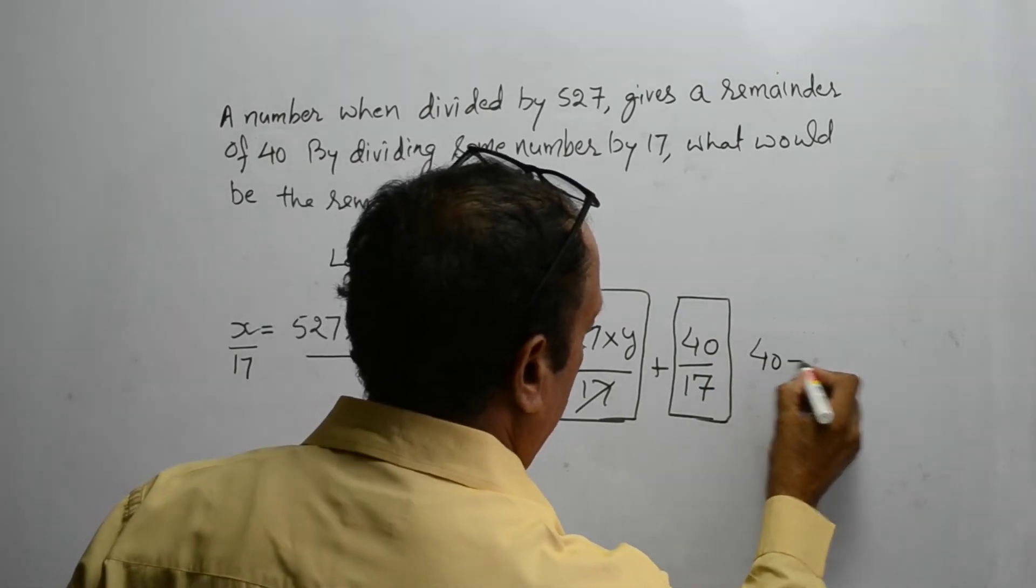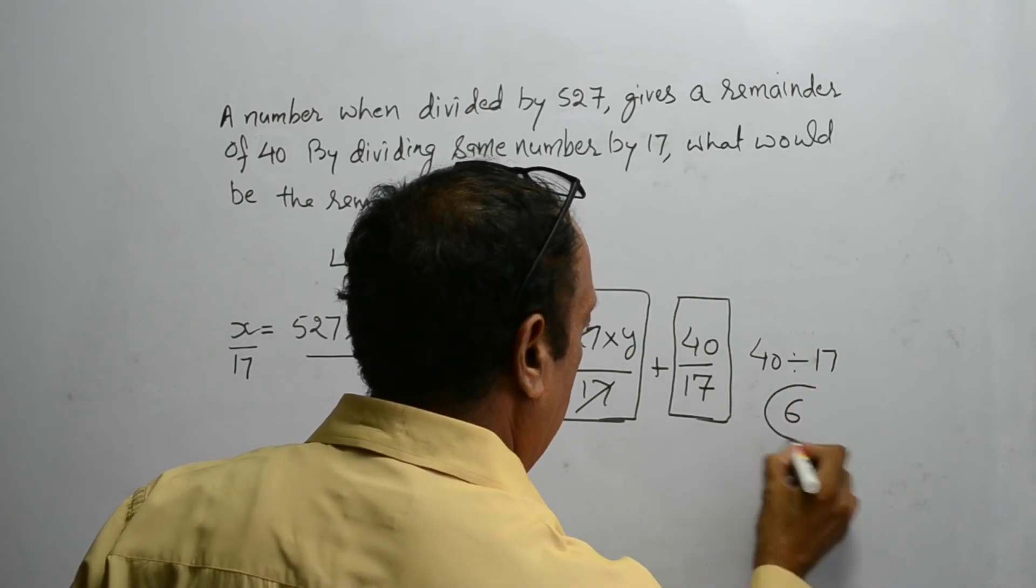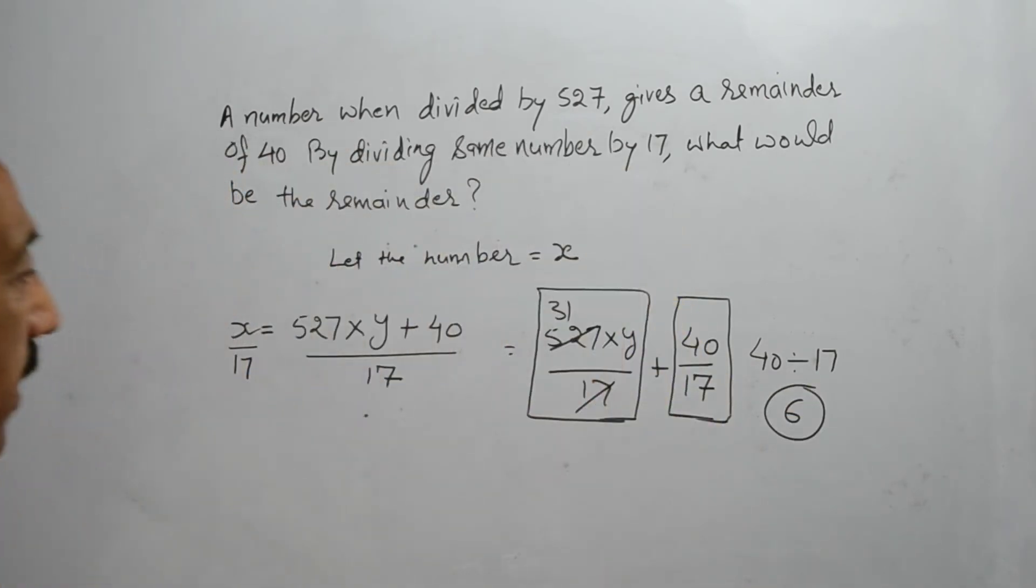40 divided by 17 is going to give 6 as the remainder. So, the answer to this question is 6.